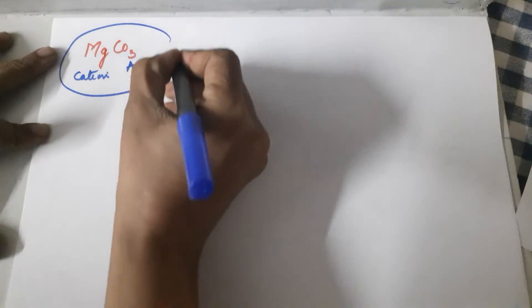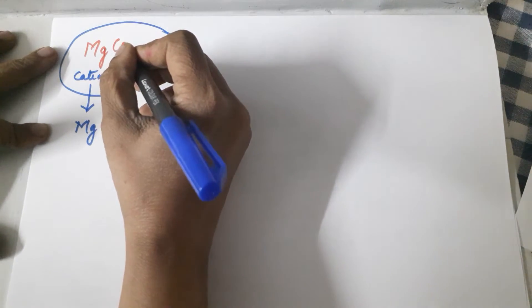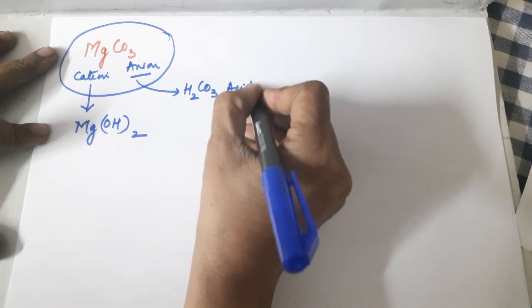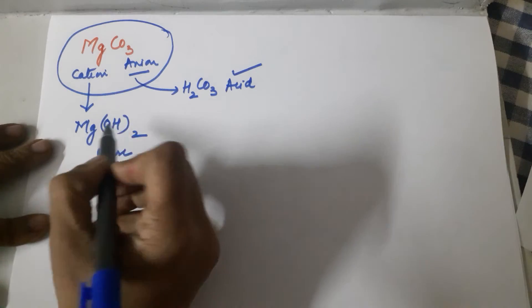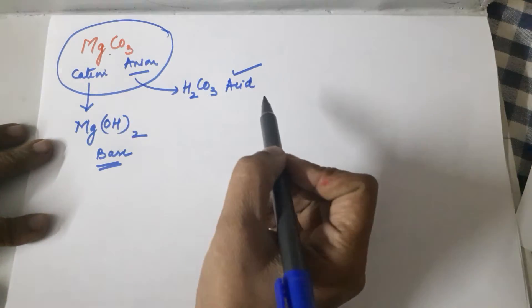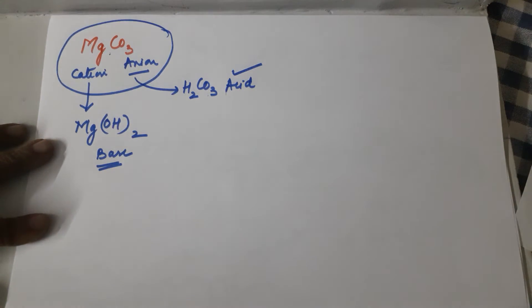Next example: magnesium carbonate, MgCO₃. This is your cation and this is your anion. Add hydroxyl ions to the cation — magnesium has a valency of 2 — so you get Mg(OH)₂. Add H⁺ to the anion CO₃²⁻ — carbonate has a 2-minus charge, so you add two hydrogens to make carbonic acid, H₂CO₃. So H₂CO₃ is the acid and Mg(OH)₂ is the base required to make this salt.